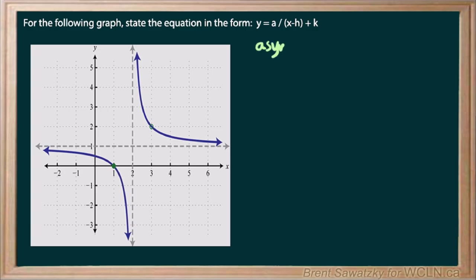We take a look at it from a horizontal asymptote point of view. We can see that we have a line across there at y equals 1. Now, from a vertical, we have the up and down line there at x equals 2.